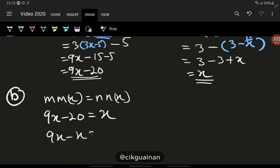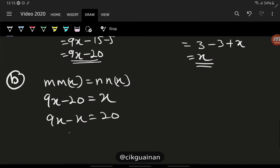So 9x, we group the x's together, and then 20, 8x = 20. x = 20 over 8 or 5 over 2. Yes, 20 divided by 4 is 5, 8 divided by 4 is 2.